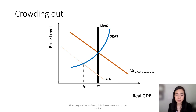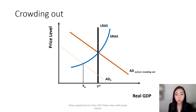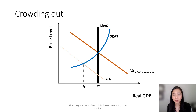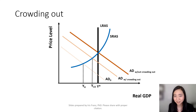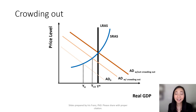In that case, the demand for loanable funds is going to increase because of government borrowing. Interest rate will go up, private investment will go down. So even though government spending increases, private investment goes down. Therefore, aggregate demand is not going to shift all the way to the right — it will be somewhere in the middle. We can see that output is not going to be restored to the potential level, and that's a drawback of crowding out.